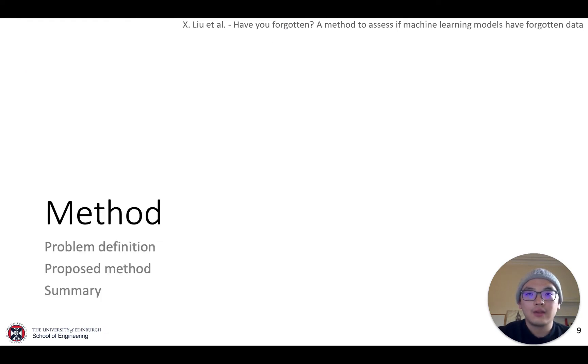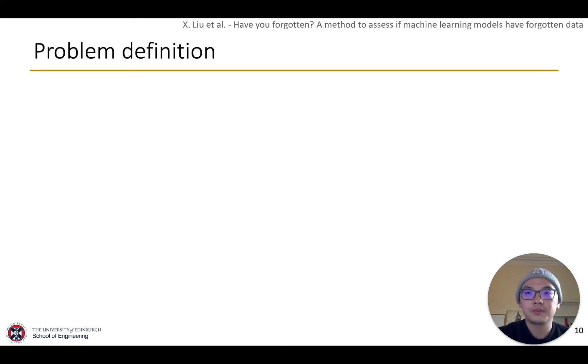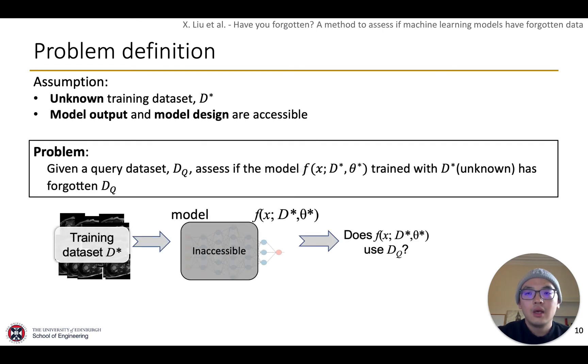For the method, we first formalize the problem and we propose a solution. For the assumption, the training dataset D star is unknown, and we assume the model output and model design are accessible. The problem is defined as giving a query dataset DQ a size if the target model Fx trained on D star with weights theta star has forgotten DQ.